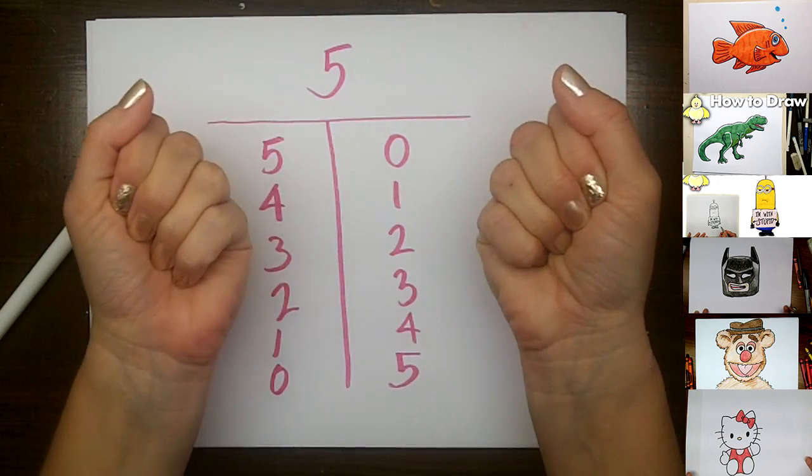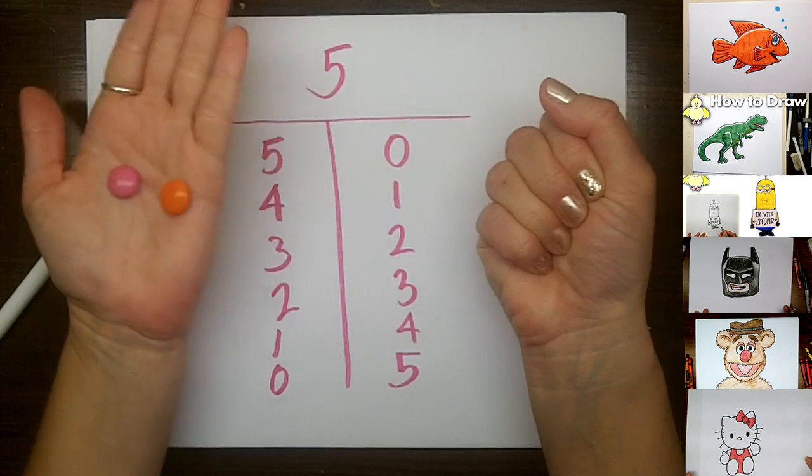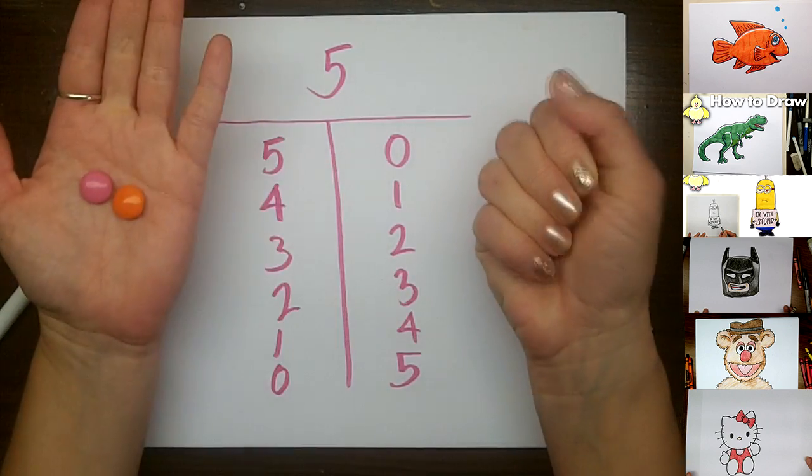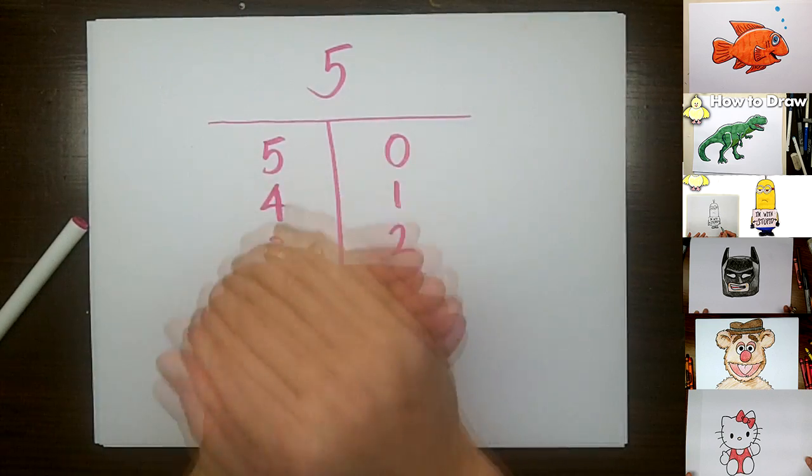And then open a hand and see that you have two, and if you have two in one hand that means you must have three in the other, and you do.